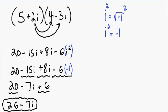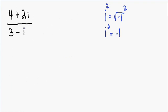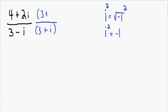Now let's go over an example where we divide imaginary numbers. Here we have 4 plus 2i divided by 3 minus i. Whenever you're dividing complex numbers, you can never leave an imaginary number in the denominator. So our first step is to get rid of this imaginary number in the denominator. To do this, we need to multiply by the conjugate. The conjugate is exactly the same as the denominator, except you change the sign in front of the i term. So instead of 3 minus i, we're going to have 3 plus i. And whatever you do to the bottom, you also have to do to the top, so we're multiplying the top and bottom by the conjugate 3 plus i.